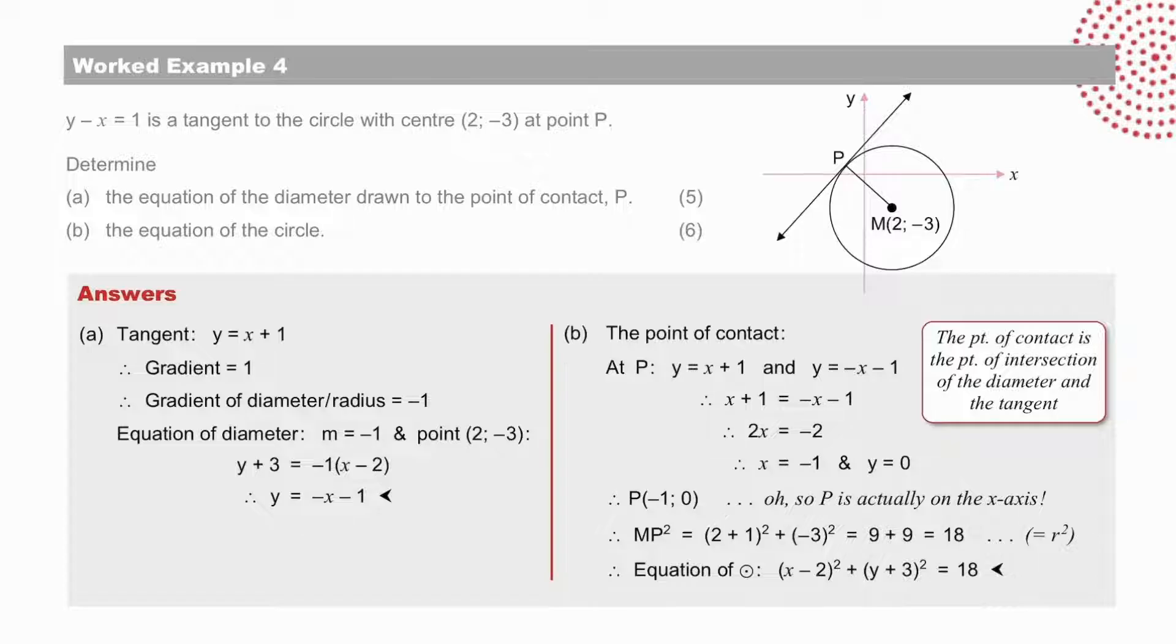In b, to find the equation of a circle, we need the center, which we have, and we need r, the radius. But to calculate r, we need the coordinates of the point P. And the significance of the point P is that it is the point of intersection of the diameter and the tangent. And so, we solve the equations. And we find the coordinates of P to be minus 1, 0.